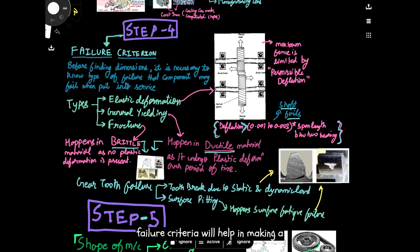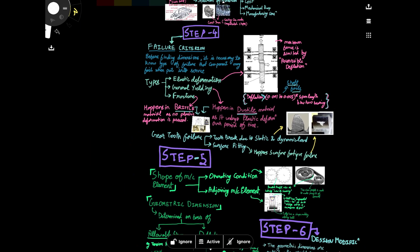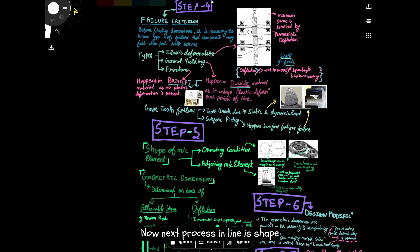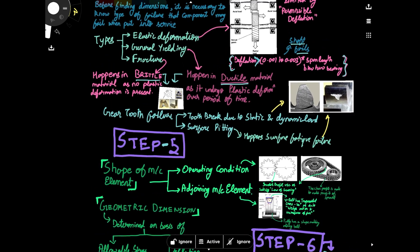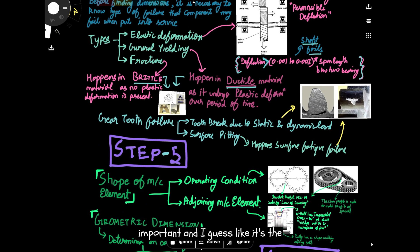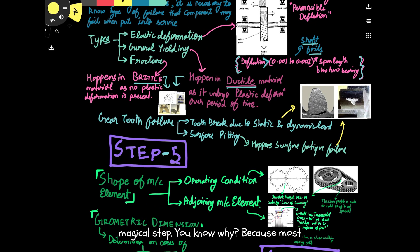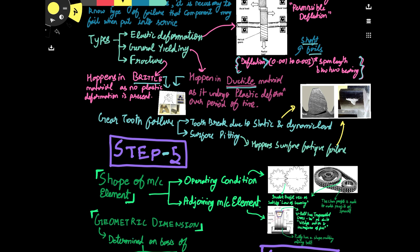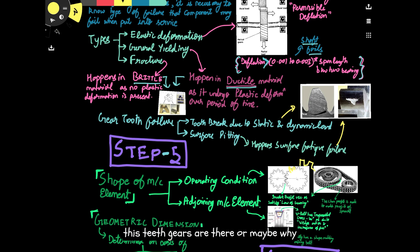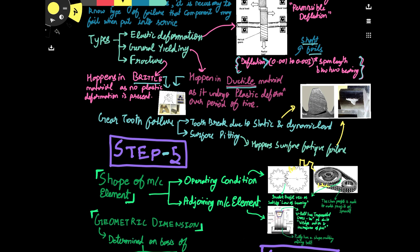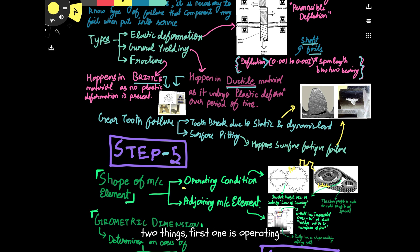Step number four is very important because knowing the failure criteria will help in making a part which is much more sustainable. The next step is the shape of a machine element — it's a very important and almost magical step. Most of us wonder why a particular shape is the way it is. The shape of a machine element is decided by two things: operating condition and adjoining machine element.